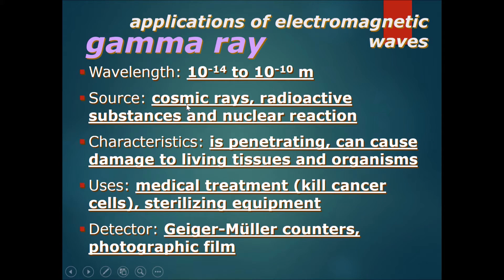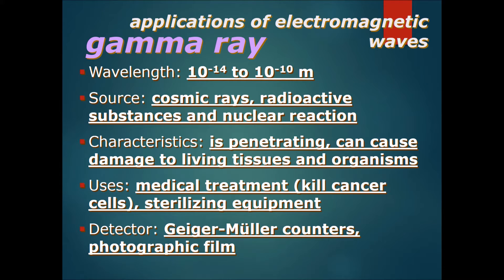Sources of gamma rays include cosmic rays — meaning rays from the sun — radioactive substances, and nuclear reactions. A key characteristic is that they are penetrating, because they have high frequency and high energy. Therefore, they can actually enter living tissues and organisms, penetrating through the walls of skin and cells.